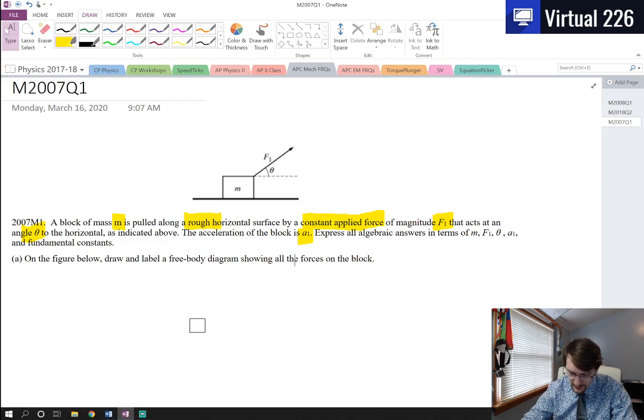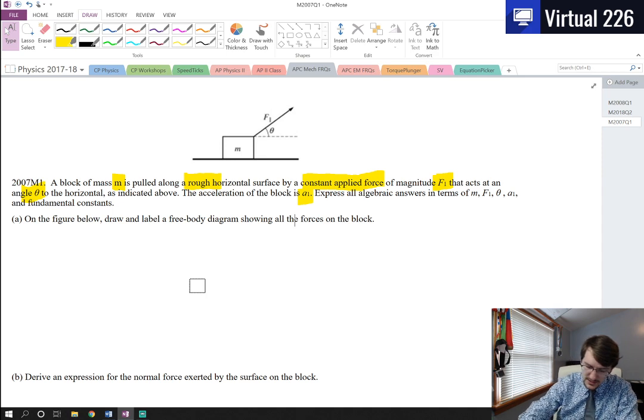On the figure below, what we're just asked to do initially is to draw and label a free body diagram showing all the forces on the block. Normally for a free body diagram, you have a dot that you draw everything from. For a square like this, I would call that a force body diagram, but whatever.